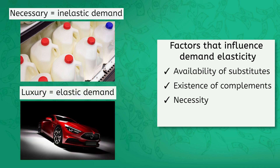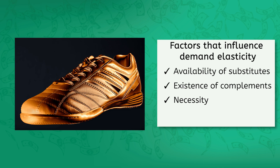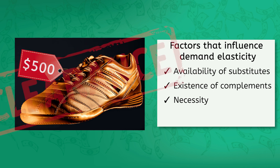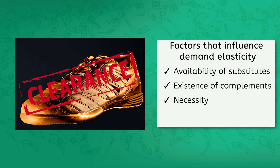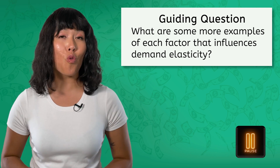Luxury goods, on the other hand, tend to have more elastic demand — you don't really need them. Take an expensive pair of shoes, for example. You might save up and splurge once or twice on an amazing pair of sneakers for $200. Now, if the price increased to $500, you could easily skip it. But if the price was knocked down to $50 a pair? You'd be heading down to the store to buy a few pairs — gifts for everyone! That's elastic demand, alright. Now let's take a few minutes to think of some more examples of each of these factors to complete your graphic organizer.